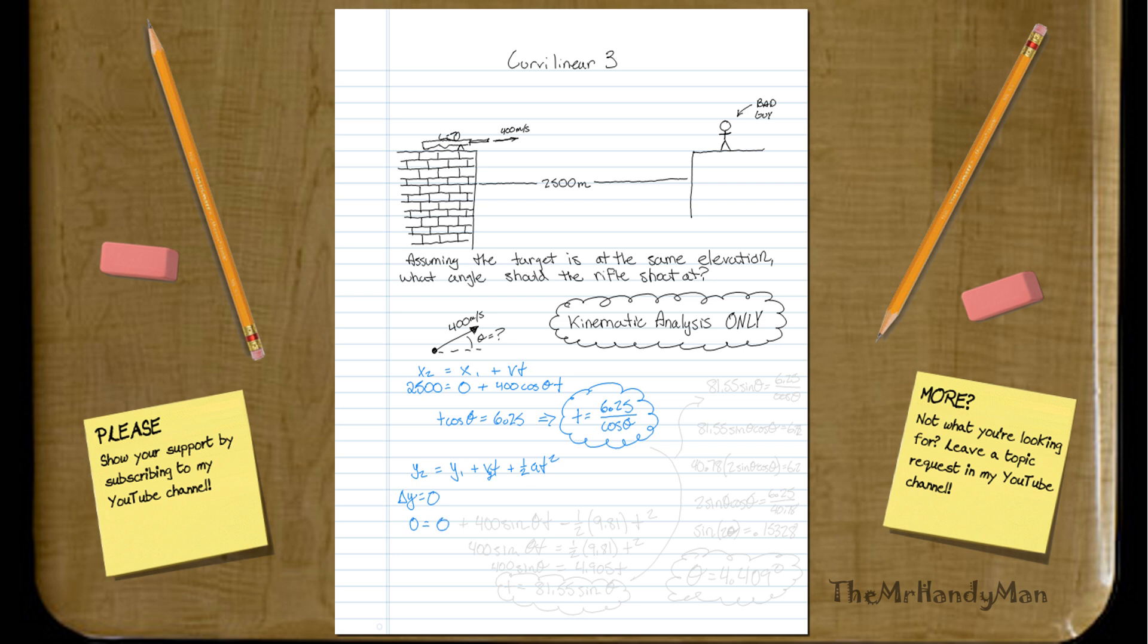0 equals 0 plus 400 sine theta t minus 1 half, what I'm going to say is 9.81 times t squared.